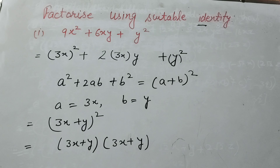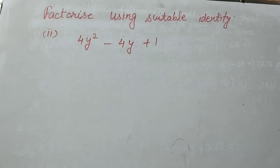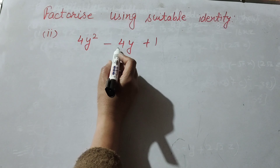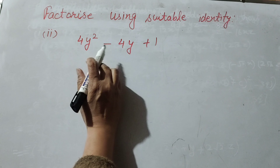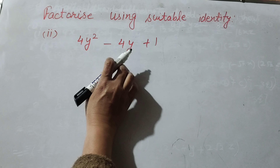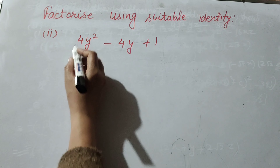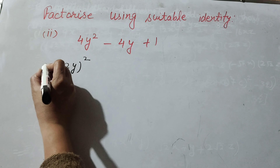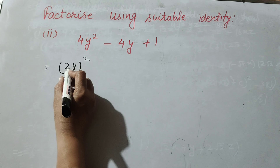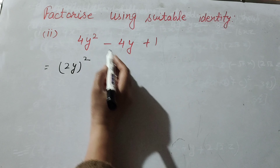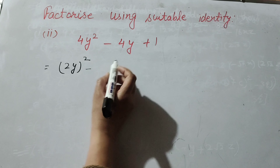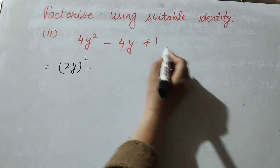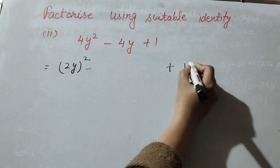Now we move to the next question. In the second part there is 4y squared minus 4y plus 1. We make the factors of this expression using a suitable identity. We write 4y squared as (2y) squared, meaning 2y multiplied by 2y equals 4y squared. At the last term there is plus 1.